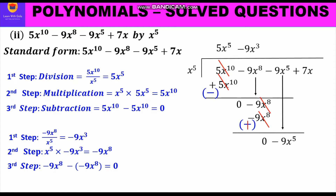We bring down the next term, minus 9x⁵, and go through the three-step process again. Division: minus 9x⁵ divided by x⁵ gives minus 9. Multiplication: minus 9 times x⁵ gives minus 9x⁵, written below what we brought down. Subtraction: minus minus becomes plus — one term is minus, one is plus — they cancel and we get 0.